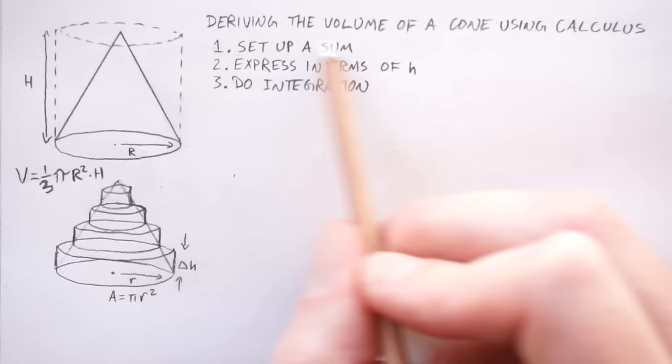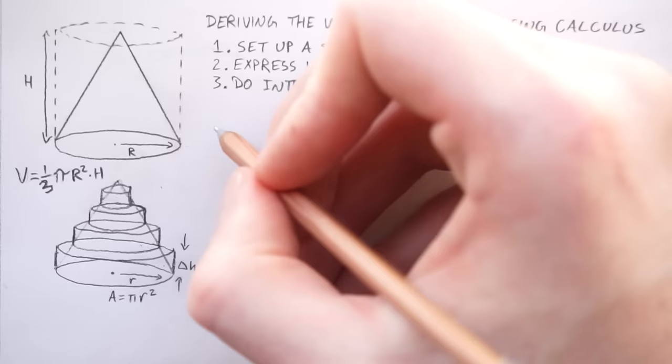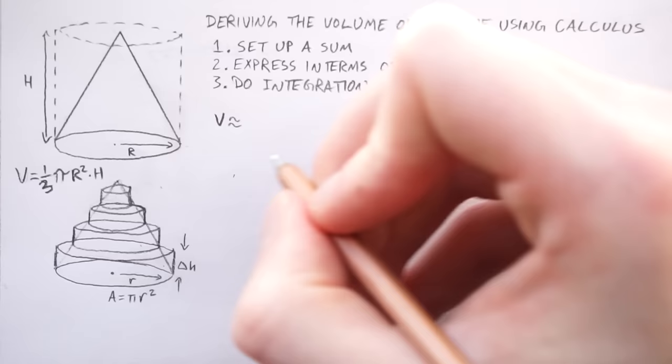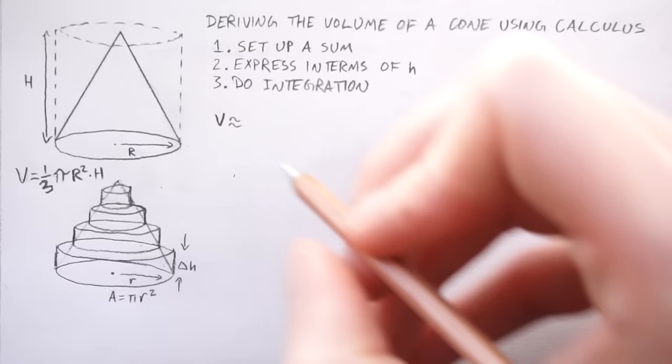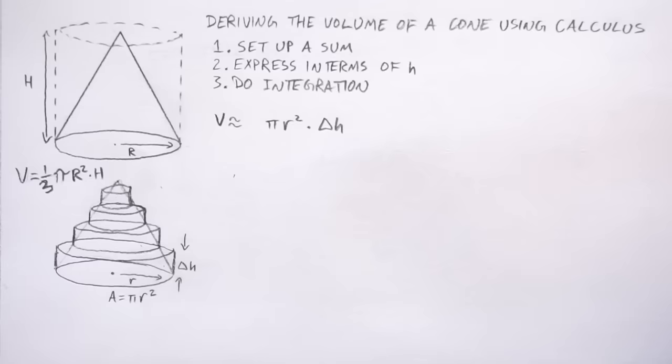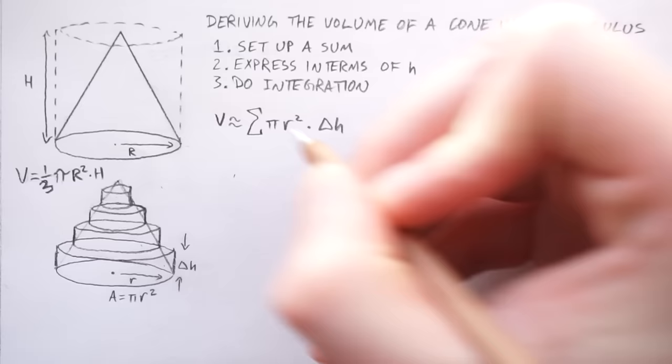So we need an expression which is basically going to be this disk plus this disk plus this disk plus this disk. So what we can write is that the overall volume is approximately equal to, let's just start on this first disk here. So it will be pi r squared times delta h. So that's for the first one. And we're going to just write the sum. So we're going to use this sigma, which just denotes we're adding up a load of disks together.